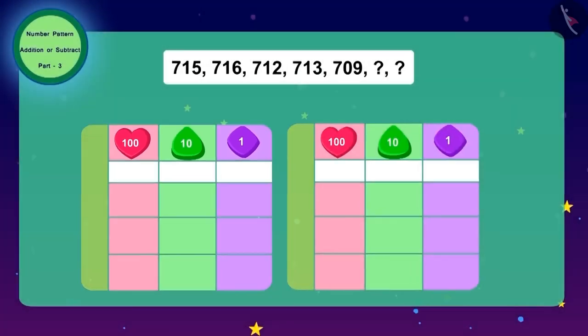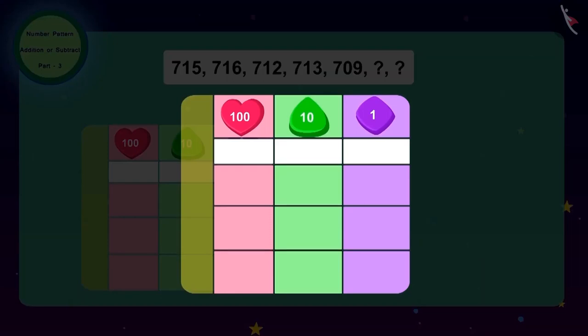710. Now, what should we do to get the next number? We will have to subtract four from 710. And the last number of our code becomes 706.